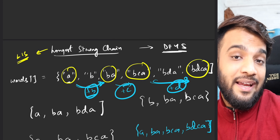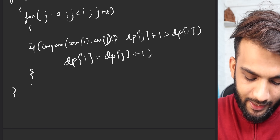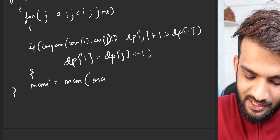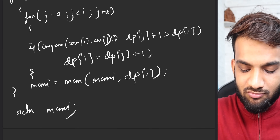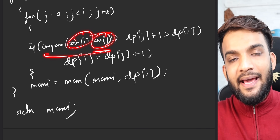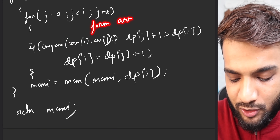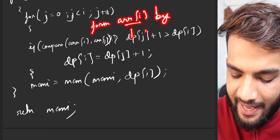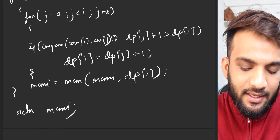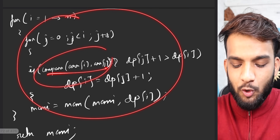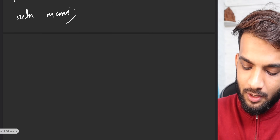If I can write a compare function, my problem will be solved. I can get the maximum by taking max of maxi and all dp[i] values, and that's my answer. The only change is: instead of checking array[i] > array[j], I check if it's possible to form array[i] by inserting one character into array[j]. That's it - that is what I need to compare.